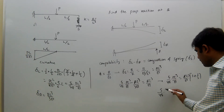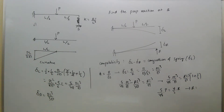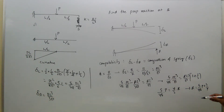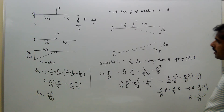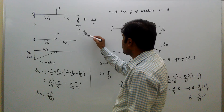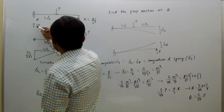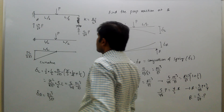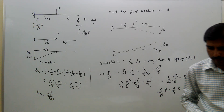From 5/48 · P equals 4/3 · R, we get R equals 5/48 · P times 3/4, which equals 5/64 · P. So the proper reaction R equals 5/64 · P. The key point to remember is that the compatibility condition changes to delta L minus delta R equals compression of the spring when a spring support is present.